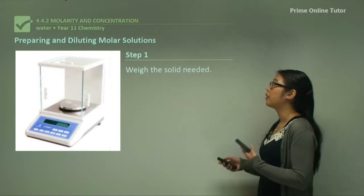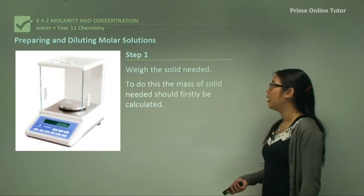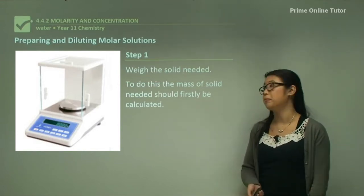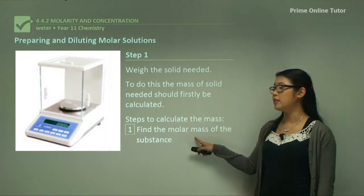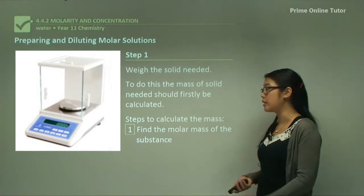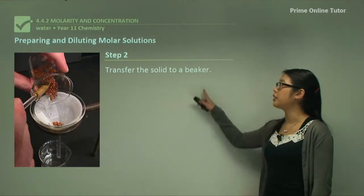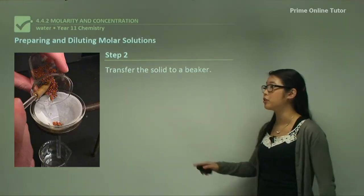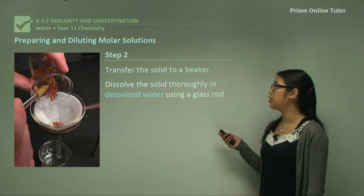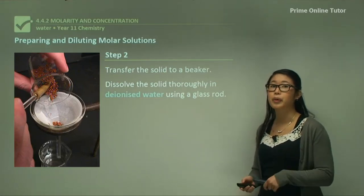To make a solution, first weigh the solid you want to dissolve — for example, sodium chloride. You need to know the mass, then calculate the number of moles using the molar mass of the substance. For NaCl, look up the molar mass in the periodic table and add sodium and chloride together. Then transfer the solid carefully into the beaker, making sure all the solid gets in. Dissolve it thoroughly in deionised water using a glass rod to avoid spilling.